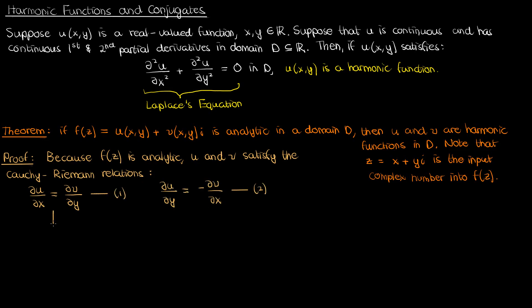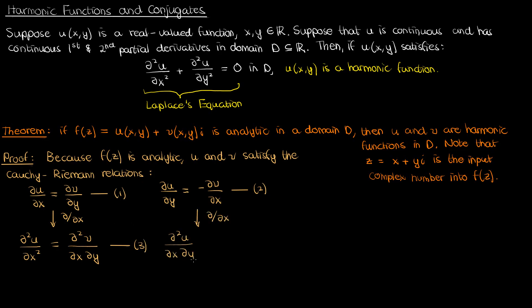If I take both of these equations and differentiate both sides of equations 1 and 2 with respect to x, my first equation will become the second partial of u in x on the left, and the mixed partial of v on the right. Meanwhile my second equation will become the mixed partial of u with respect to x and y, and the negative second partial of v with respect to x. I'll label these equations 3 and 4 respectively.